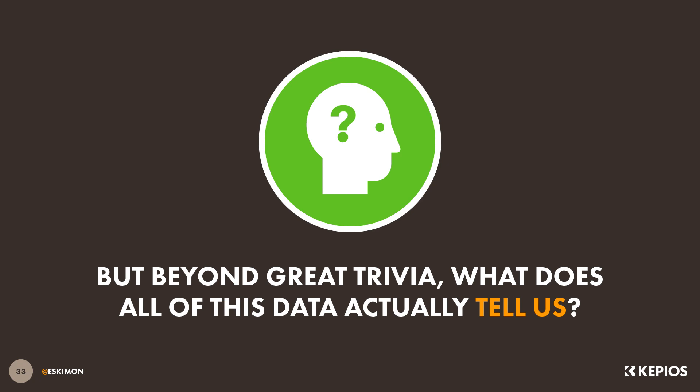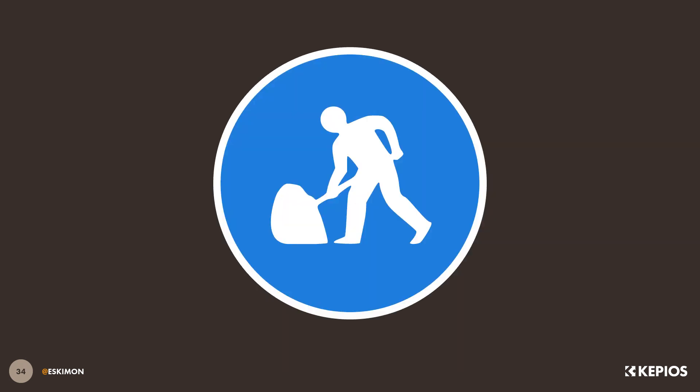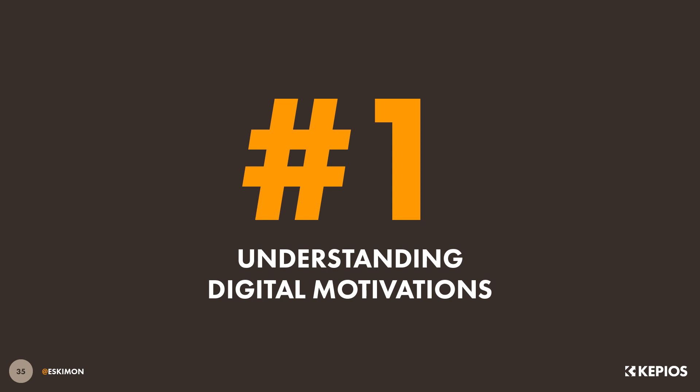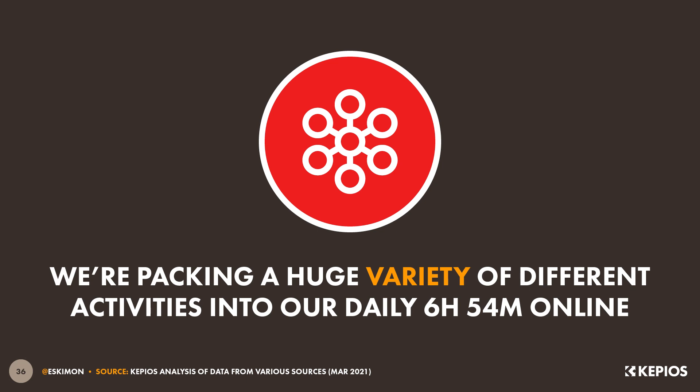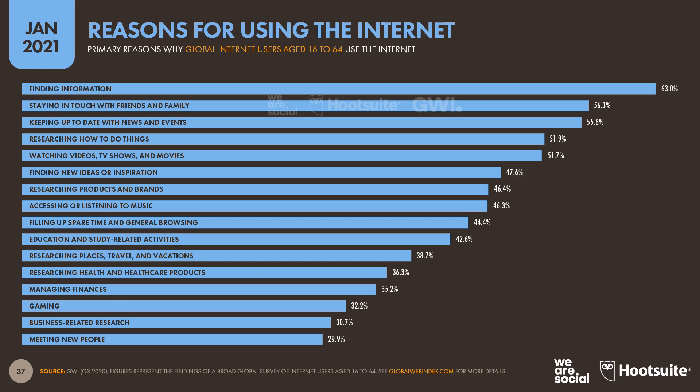But beyond providing interesting trivia, what does all of this data actually tell us about people's evolving online behaviours? Let's dig a little bit deeper into the underlying trends, starting with a look at the reasons why the world's internet users are going online in the first place. We're packing a huge variety of different activities into the almost seven hours that we spend online each day. Interestingly, finding information remains the top motivation for internet use at a global level, with nearly two-thirds of internet users citing this as one of their primary reasons for going online.